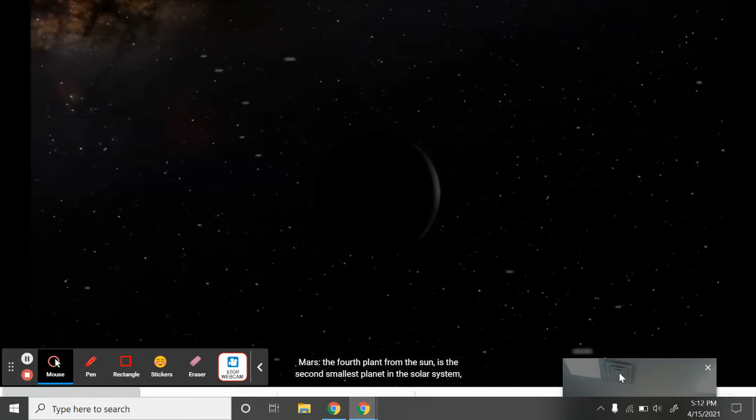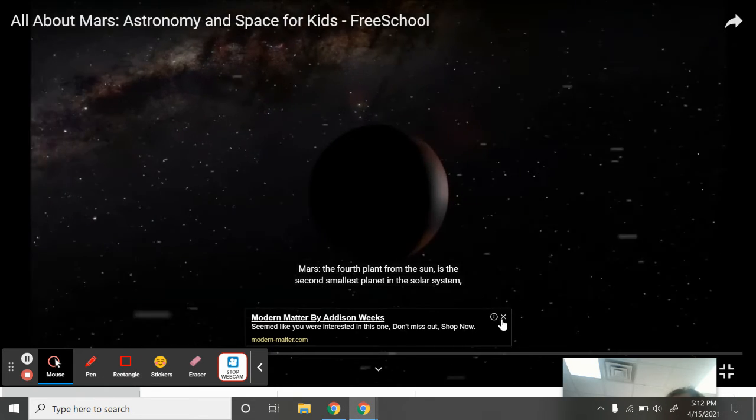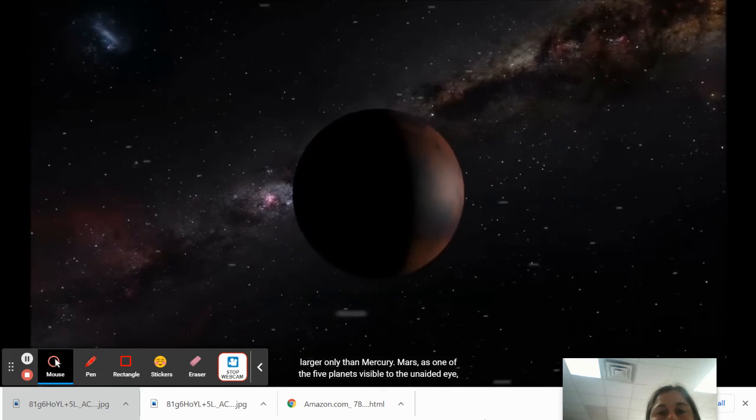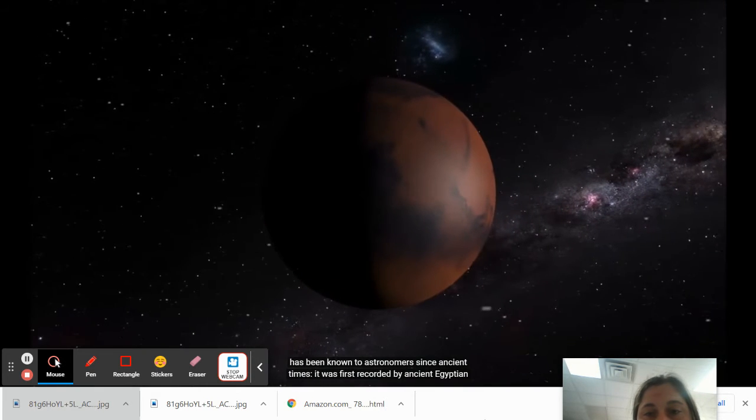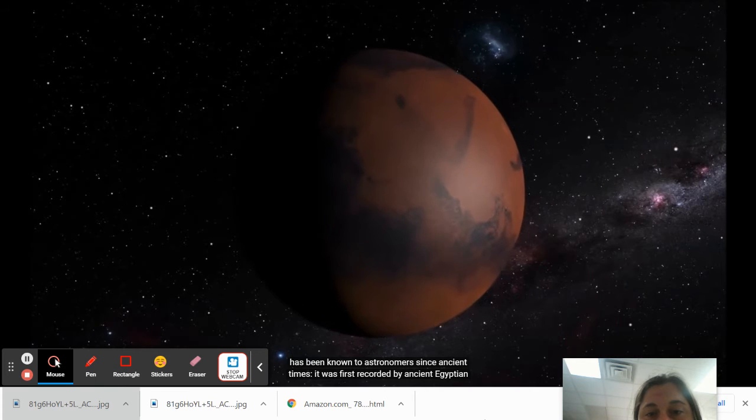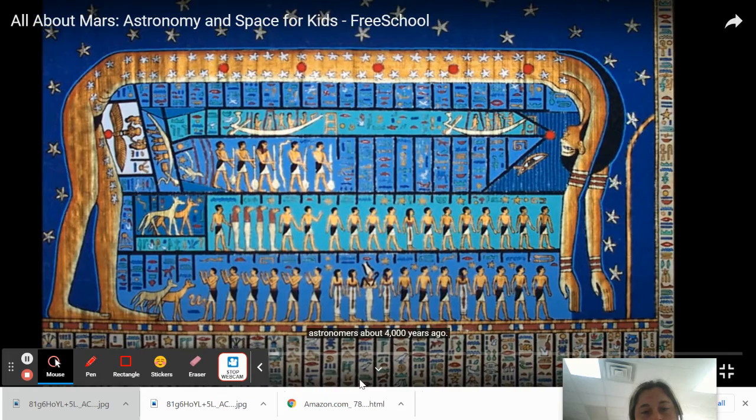Mars. The fourth planet from the sun is the second smallest planet in the solar system, larger only than Mercury. Mars, as one of the five planets visible to the unaided eye, has been known to astronomers since ancient times. It was first recorded by ancient Egyptian astronomers about 4,000 years ago.